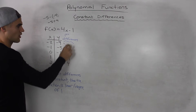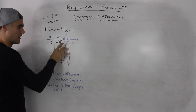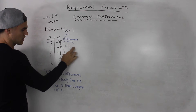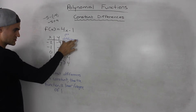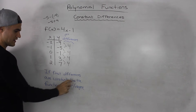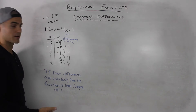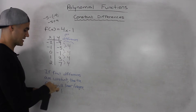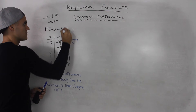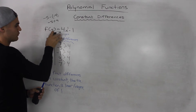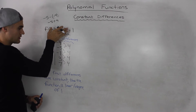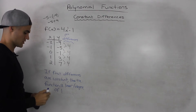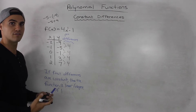This column of 4s is called our first differences, because it's the first column we made from subtracting the table of values. Notice how this column is constant, with a constant value of 4. Since the first differences are constant, the function we're dealing with is linear, or has a degree of 1. If we were only given the table of values and not the algebraic function, we could determine it's linear because the first differences are constant — a nice way to check the degree.